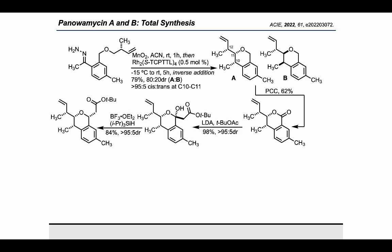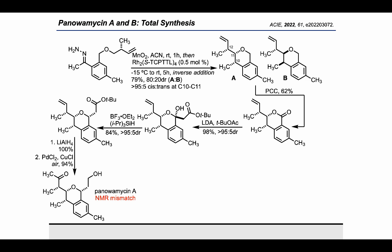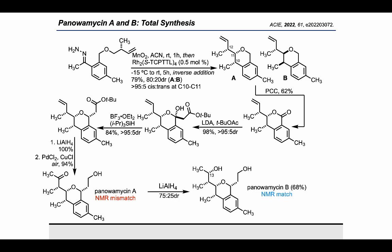Taking the major isomer into the nucleophilic addition and reduction sequence previously described in the hydroboration-oxidation route, we were finally able to access the fully substituted all-cis isochroman ester intermediate. After a facile reduction, the Wacker oxidation was performed, which generated the proposed structure of panolamycin A. Much to our disappointment, this compound was again an NMR mismatch for the natural material. However, reduction of the methyl ketone with lithium aluminum hydride produced a 75:25 mixture of C-13 diastereomers, where the major isomer was an NMR match for the natural sample of panolamycin B.